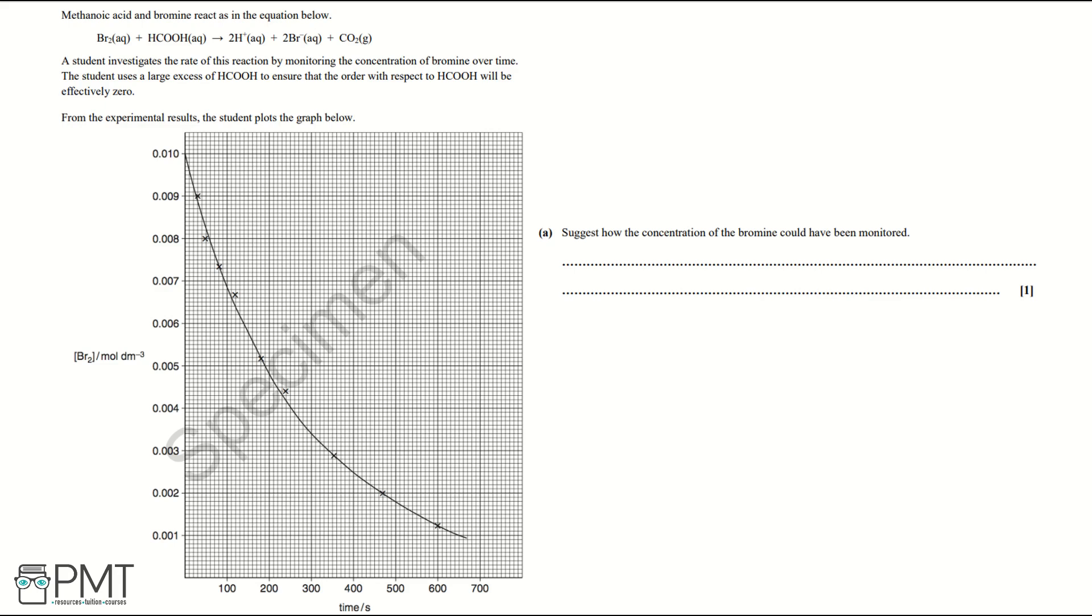Part A: Suggest how the concentration of the bromine could have been monitored. To get the marks for this question we must write: measure reduction of the colour of bromine. That's how we're monitoring the concentration of bromine using colour. So this statement gets us the mark for this question.